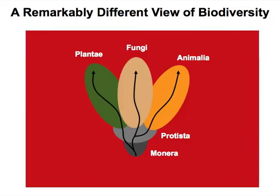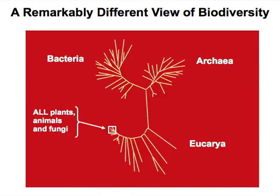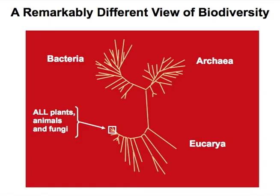We went from a tree of life that looked something like the five-kingdom view to one that's quite different. Instead of five kingdoms, we now think of the tree of life as being part of three different domains: the Eukarya, the Bacteria, and the Archaea. Just to orient you — in the Eukarya, three little pieces at one tip contain all of the plants, all of the animals, and all of the fungi combined. Now you've got two very large domains made up completely of unicellular, non-nucleus-containing microbes.